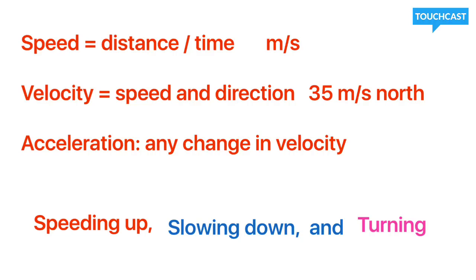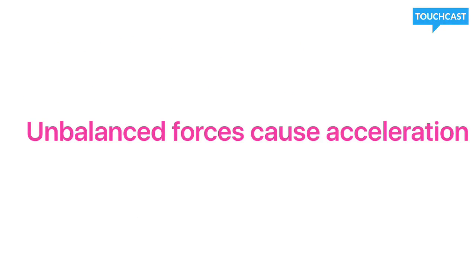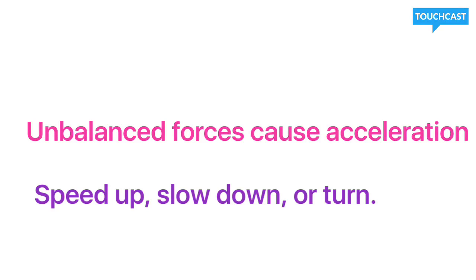Let's go ahead and look at unbalanced forces and how they affect acceleration. Basically, an unbalanced force will cause an acceleration. So if you have an unbalanced force, the object will either speed up, slow down, or turn. Anytime you see an object speed up, slow down, or turn, you know there's been an unbalanced force because it caused it to accelerate.